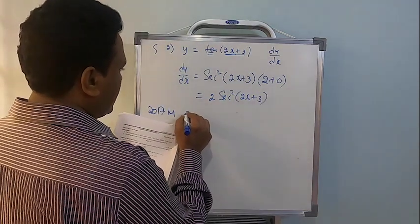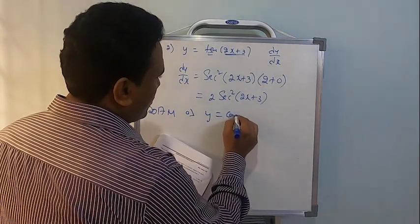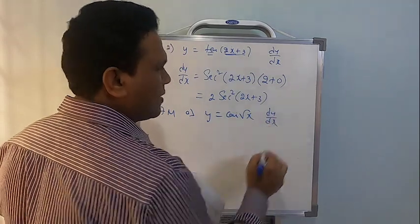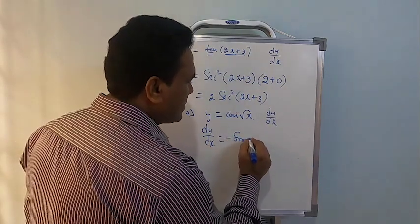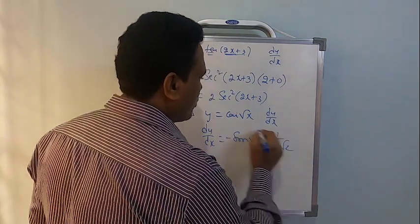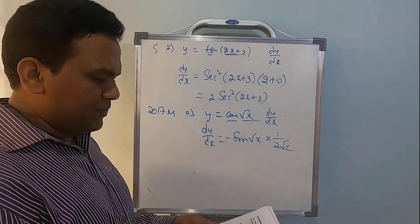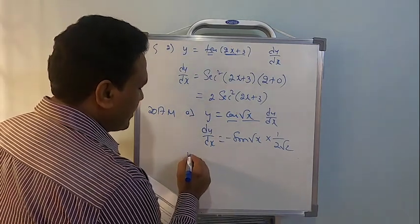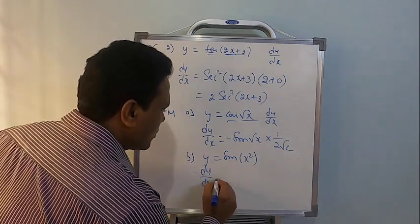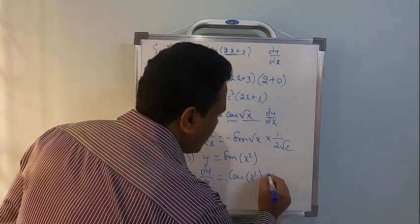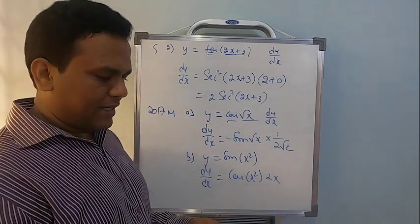In the 2017 March annual examination, if y = cos(√x), find dy/dx. dy/dx = −sin(√x) × (1/2√x). In the 2017 supplementary, if y = sin(x²), dy/dx = cos(x²) × 2x.